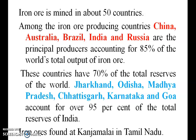The main iron-producing countries are China, Australia, Brazil, India and Russia, accounting for 85% of the world's total output of iron. In India, Jharkhand, Odisha, Madhya Pradesh, Chhattisgarh, Karnataka and Goa are producing iron. Iron ore is also found at Kanjamalai in Tamil Nadu.